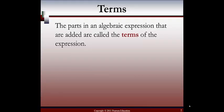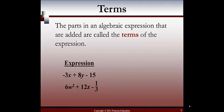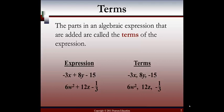Terms. The parts in an algebraic expression that are added are called the terms of the expression. Here are two examples of expressions. The first one is negative 3x plus 8y minus 15. The second expression is 6w to the second power plus 12z minus 1 third. The terms in our first expression are negative 3x, positive 8y, and negative 15. The terms in our second expression are 6w squared, 12z, and minus 1 third.